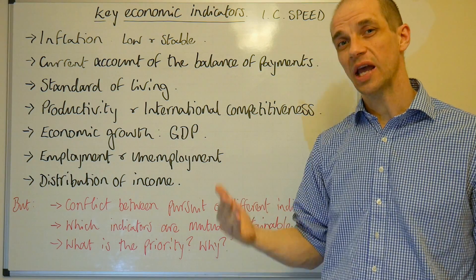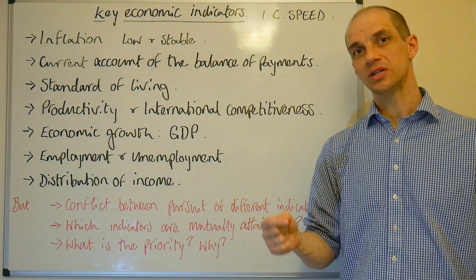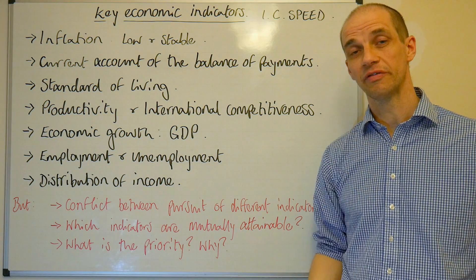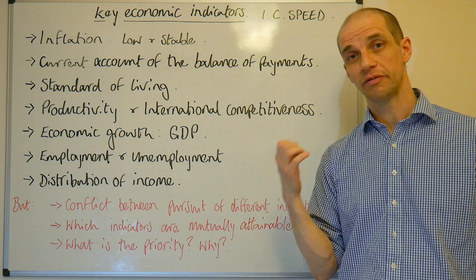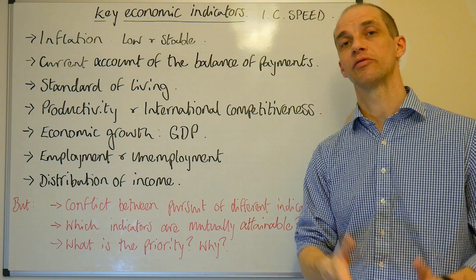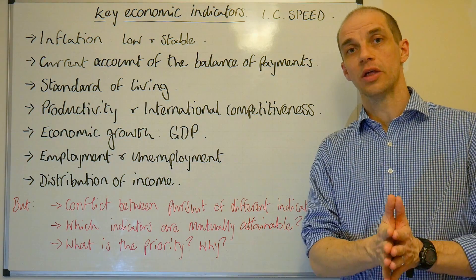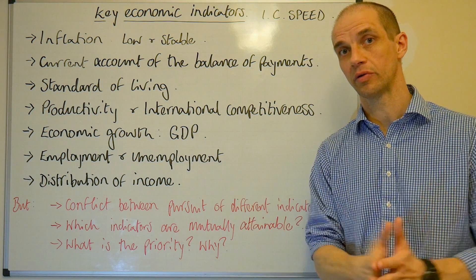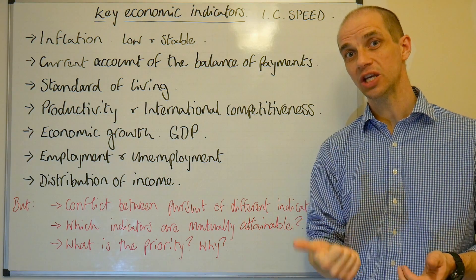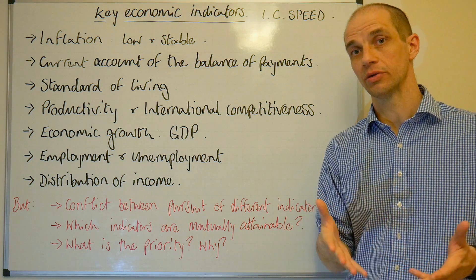Next up, standard of living. You want to have a good and improving standard of living, though this can mean different things to different people. Typically, standard of living is referred to as GDP per capita. But there are numerous problems with that — for instance, it doesn't consider the actual distribution of income across an economy, and you may have a high level of inequality. Further to that, it doesn't include things such as education and the actual level of life expectancy and health within those economies.